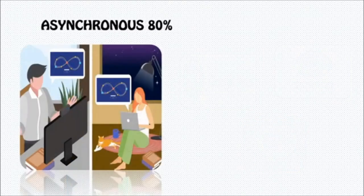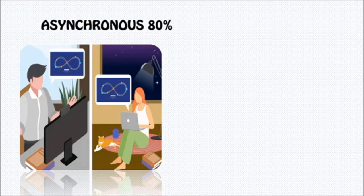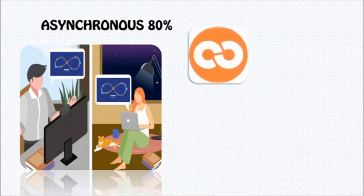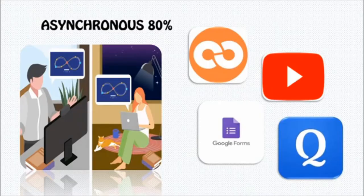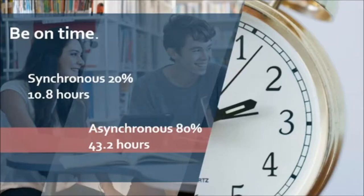On the other hand, asynchronous learning refers to all types of learning which can occur in different times and spaces, particular to each learner. In asynchronous learning, instructors usually set up a learning path which students engage with at their own pace using the university elements, YouTube, Google Forms, Quizlet, and many more. Classroom management is a must for successful learning outcomes.